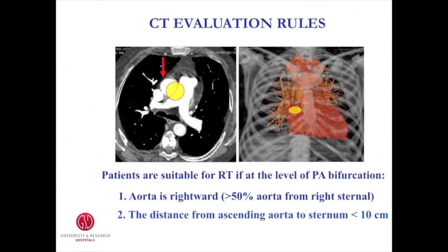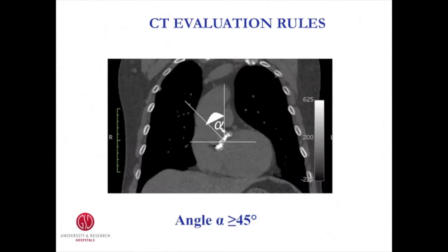Unlike the mini sternotomy, all patients scheduled for a right thoracotomy should undergo a CT scan without contrast enhancement to evaluate the anatomic relationship among the intercostal space, ascending aorta, and the aortic valve. Patients are suitable for right thoracotomy if: (1) at the level of the main pulmonary artery, the ascending aorta is rightward, meaning more than half of the ascending aorta is located on the right side relative to the right sternal border; (2) the distance from the ascending aorta to the sternum does not exceed 10 cm; and (3) the angle between the midline and the inclination of the ascending aorta is more than 45 degrees.